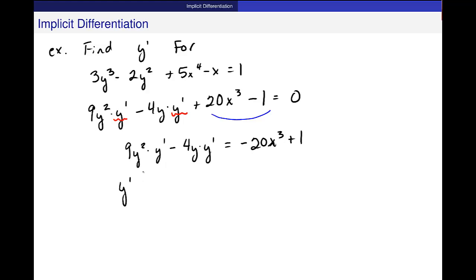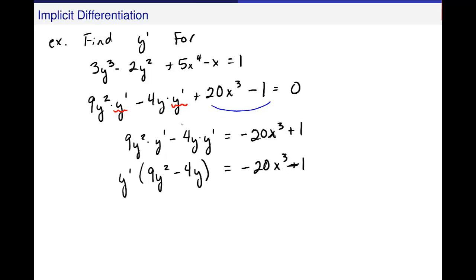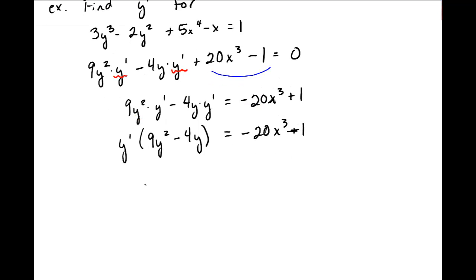Now, again, I'll use this trick. Factor out the y prime. I'm left with 9y squared minus 4y. And then divide. So, I get y prime equals negative 20x cubed plus 1 over 9y squared minus 4y. And it looks like that.